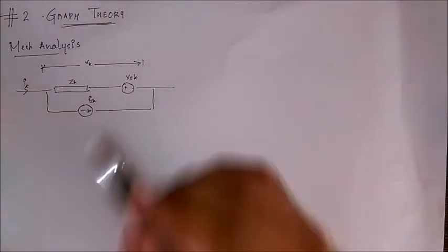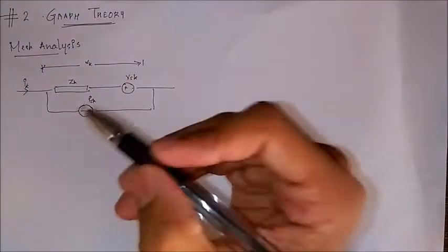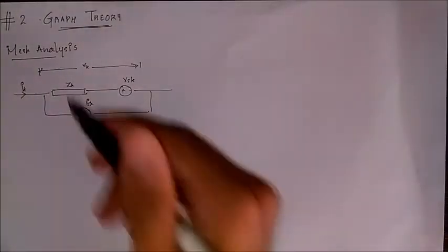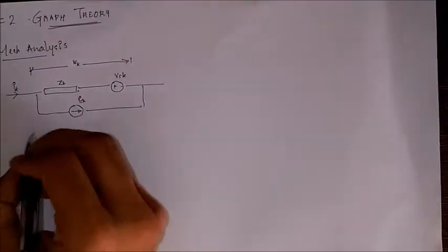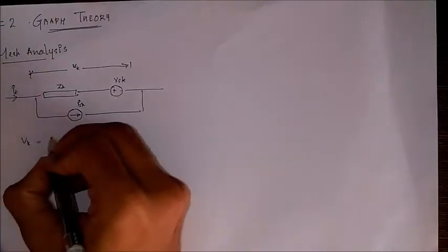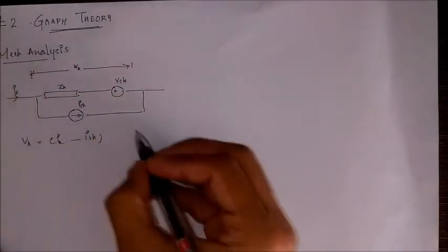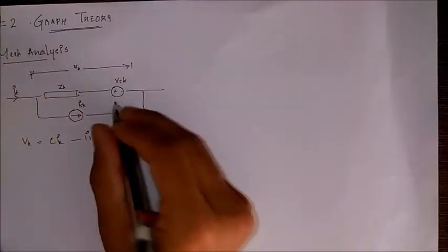Now for obtaining the mesh analysis equation in graph theory we would consider the same diagram that we took for the other derivation but with a small difference. Here we are considering the branch impedance instead of branch admittance. Writing the equation of the voltage across this branch VK, we get VK equals IK minus ISK, that is the current through this branch IK minus ISK into ZK the branch impedance plus this voltage.